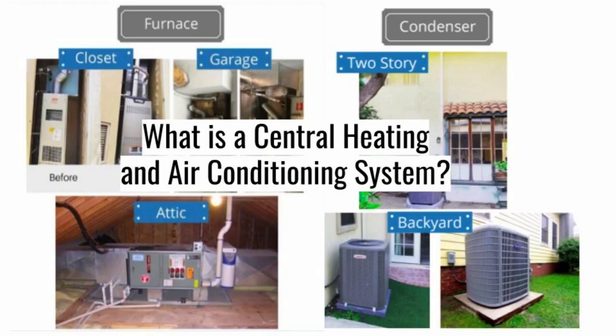What is a central heating and air conditioning system? The modern residential central air system is a thing of beauty. It was first invented over 100 years ago and has in many ways not fundamentally changed. Your home central system consists of six components, all working together to keep you warm in the winter and cool during the summer.